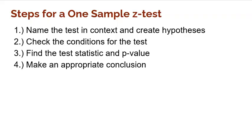All right, so let's first recap the four steps to a one-sample z-test. Step one, we've got to name the test, name the procedure in context, and create our null and alternative hypothesis. Then we've got to check the conditions necessary for the test. Step three is the part that we're going to use our calculator for to find the test statistic and p-value. And step four is to make an appropriate conclusion.